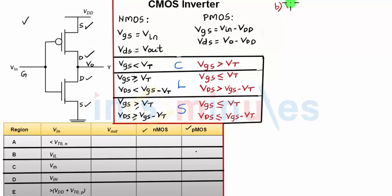Let's go ahead to the second region B. For B, I know that my Vin is equal to Vil. Now what do we know by the definition of Vil?